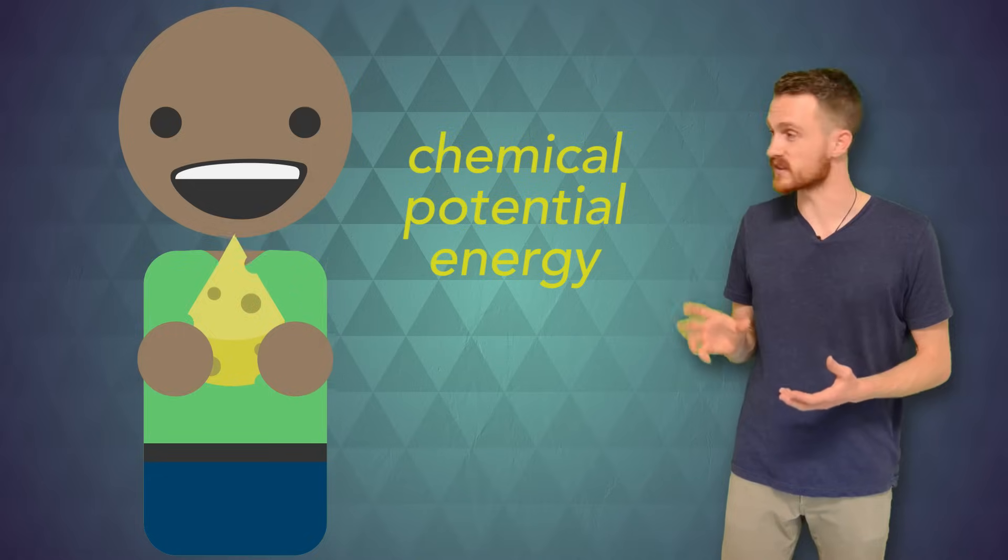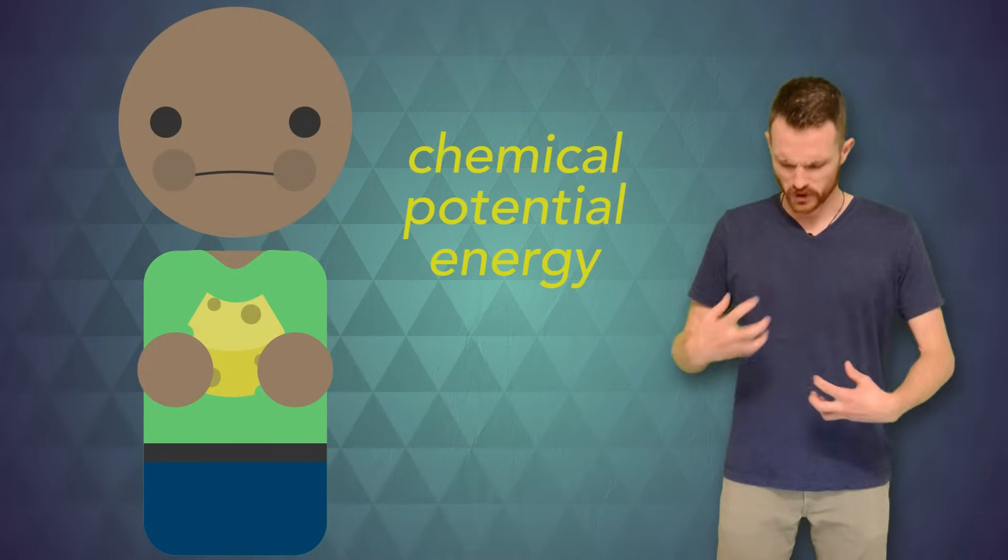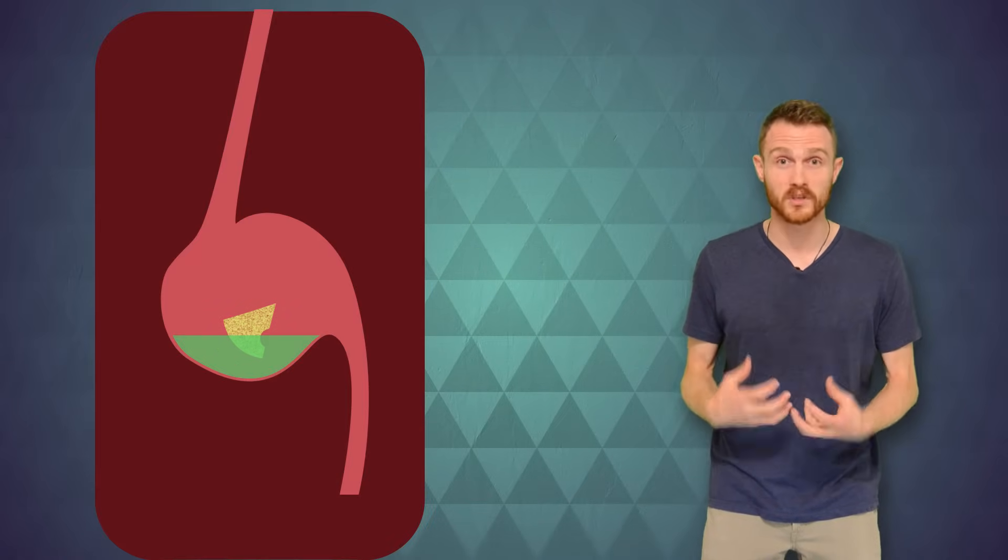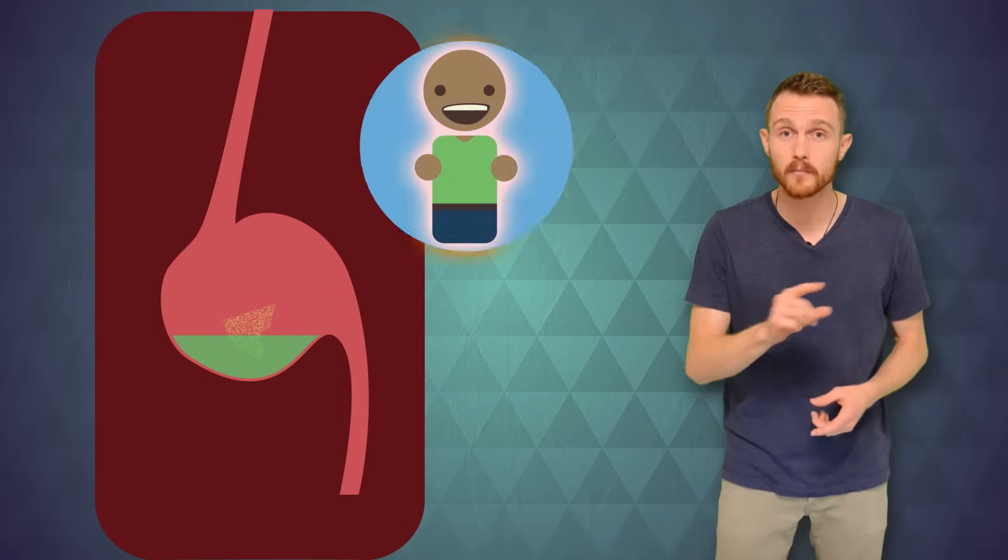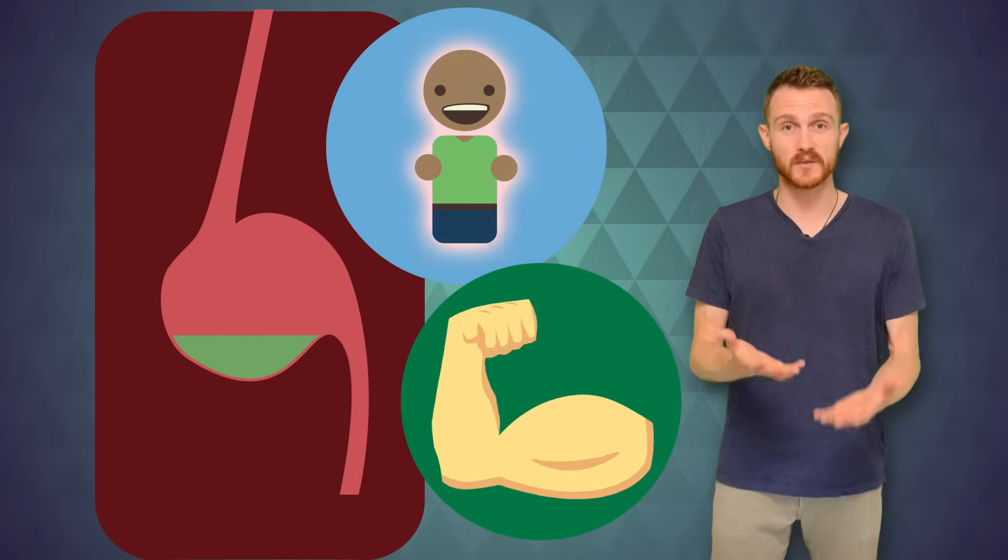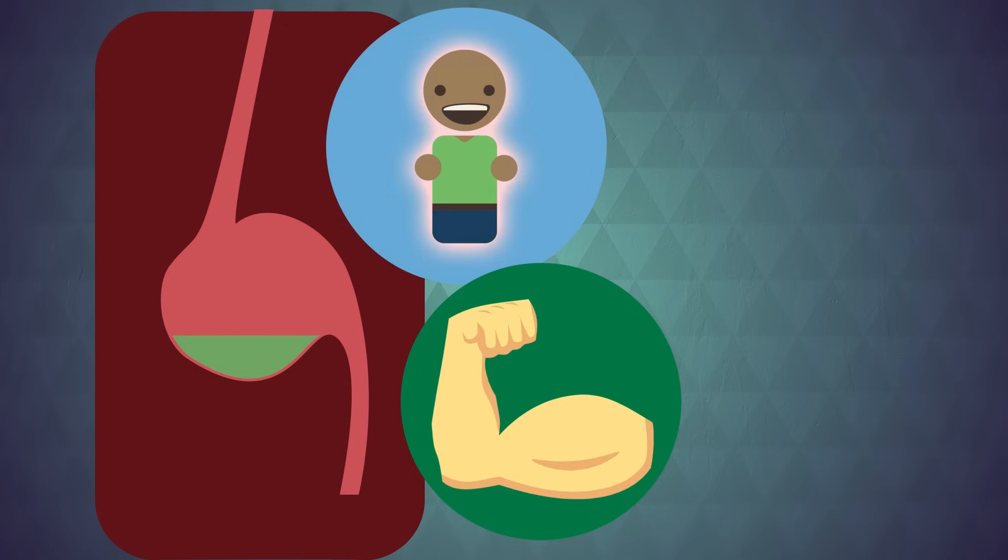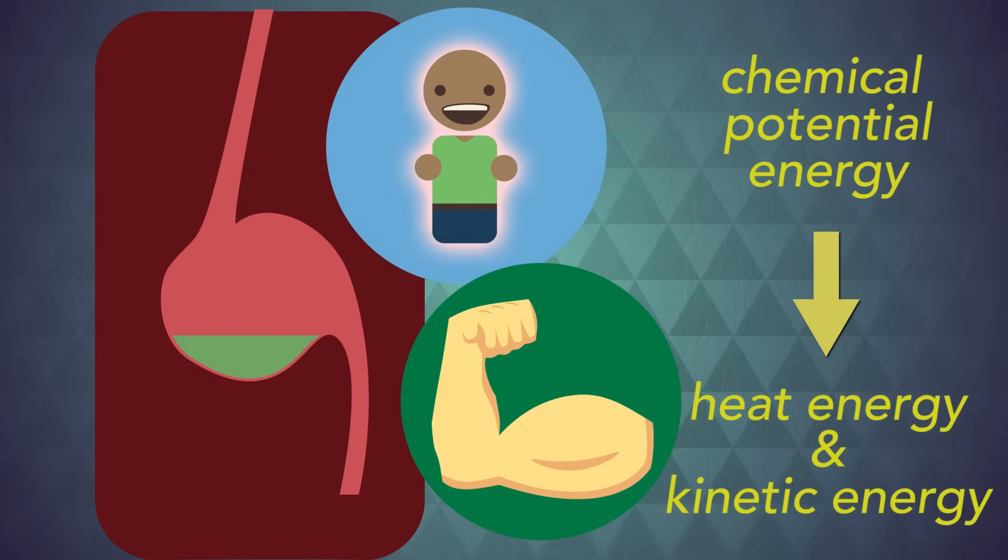A really similar thing happens when you eat food. When your body breaks down that food, chemical reactions occur that keep your body warm and allow your muscles to move. You change the chemical potential energy in the food into heat energy and kinetic energy.